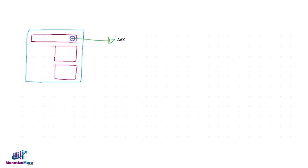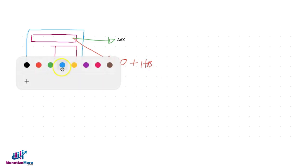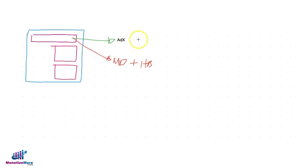You also have other line items targeting it or other bidders running on price priority — managed demand plus header bidding — so they all compete against one another. Whoever has the highest bid, whether it's Ad Exchange, managed demand, or header bidding, gets to serve the ad on this ad unit.